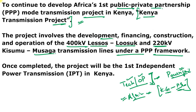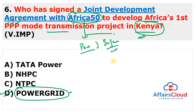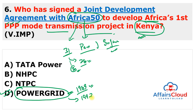The project will improve the supply and reliability of power transmission in western Kenya and increase private sector investment in Africa's power transmission network. Africa 50 is an infrastructure investment platform contributing to Africa's economic growth, currently with 31 shareholders — 28 African countries and 3 other organizations. Power Grid Corporation of India was established in 1989, renamed in 1992, and its Chairman and Managing Director is K. Shrikant. Its headquarters is in Gurugram, Haryana.